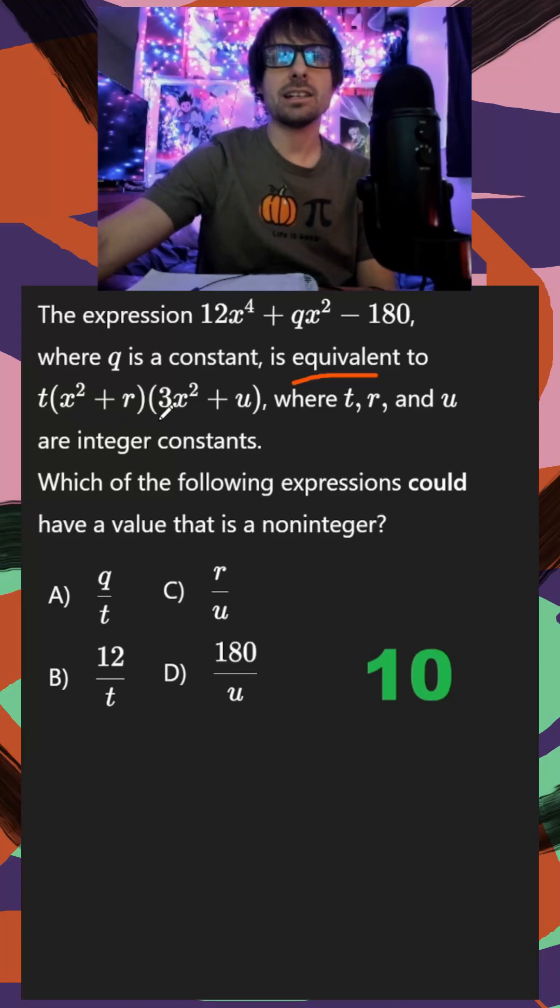So the first thing I want to think is if I expand this, I should be able to set my coefficients equal to this. So all I have to do is go through and start foiling.